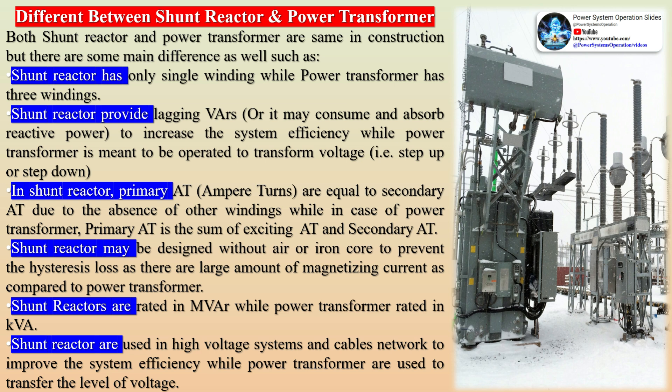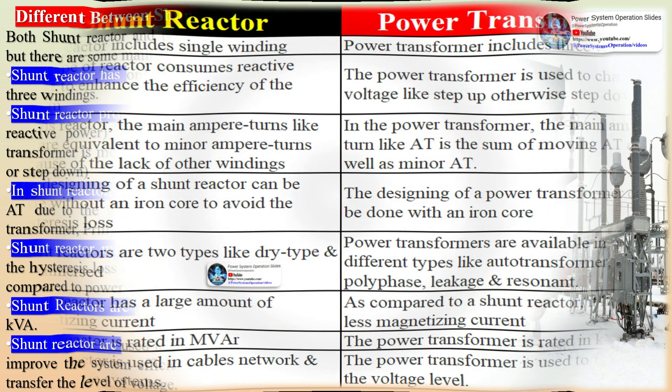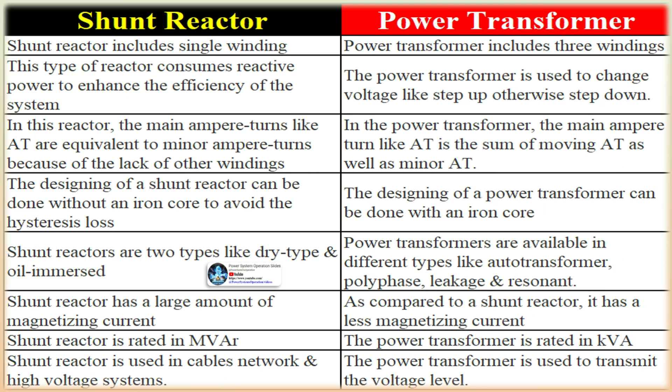A shunt reactor has only a single winding while a power transformer has three windings. Shunt reactors provide lagging VARs, consuming and absorbing reactive power to increase system efficiency, while power transformers are meant to transform voltage (i.e., step up or step down). In a shunt reactor, primary ampere-turns equal secondary ampere-turns due to the absence of other windings.